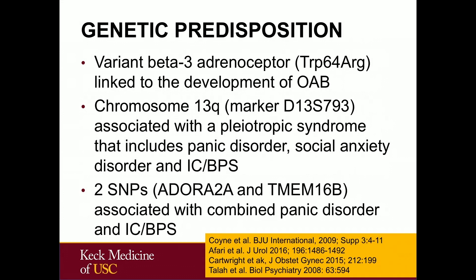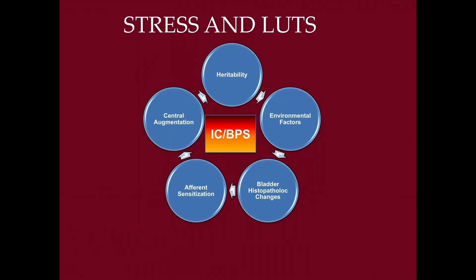Some of this might be genetic. Recent studies have shown polymorphisms in particular genes in the beta-3 adrenergic receptor, which is clearly linked to sympathetic tone, that have been linked to development of overactive bladder. There is a syndromic defect in chromosome 13q that leads to a pleiotropic syndrome including panic disorder, social anxiety, and IC, described in families where many individuals are affected. At least two SNPs have been identified associated with panic disorder and IC bladder pain syndrome. So there's some genetic evidence that something particular is occurring in these individuals.